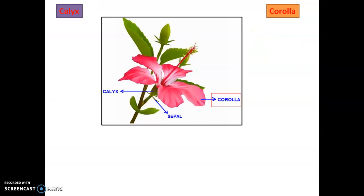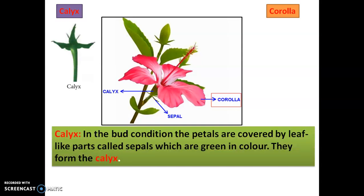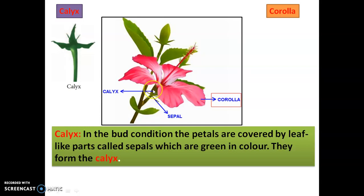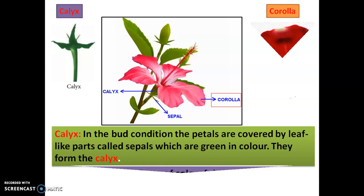First, calyx and corolla. In the bud condition, the petals are covered by leaf-like parts called sepals. This is the flower which is in bud condition — bud means before flowering. You can see that in this bud condition, the flower is covered by a green leaf-like part. These parts are called sepals and they form the calyx. Once the flower blooms and the petals come out, the calyx occupies the place at the base of the flower.